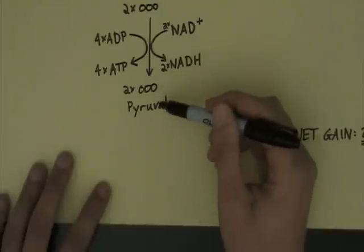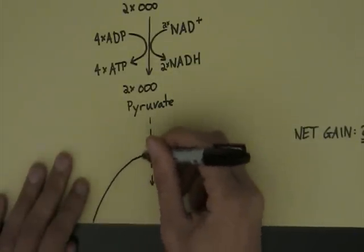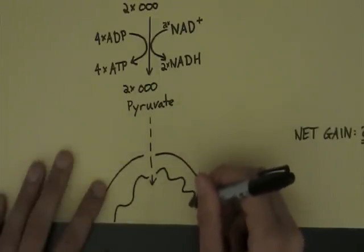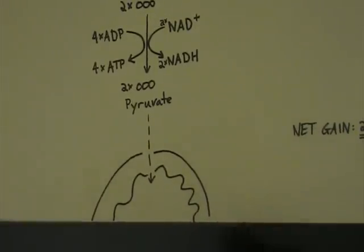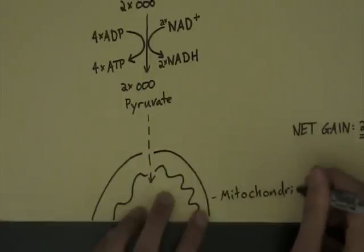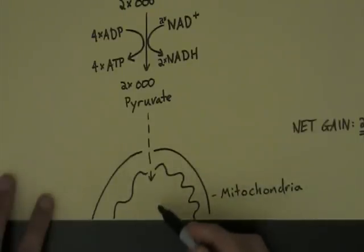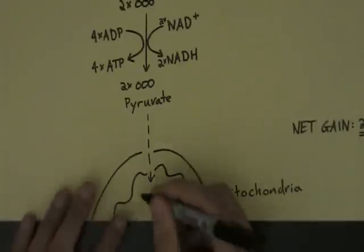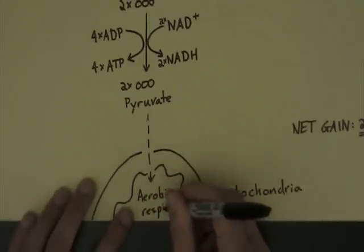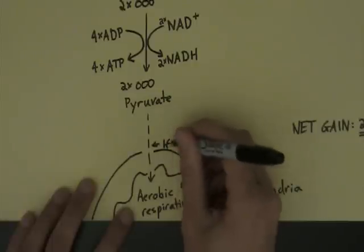In aerobic respiration, pyruvate will be taken into the mitochondria. And in the mitochondria, it will undergo the reactions of the Krebs cycle and the electron transport chain to produce lots of ATP. So this is our mitochondria. This is where the Krebs cycle happens. This is where the electron transport chain takes place. This is moving on to aerobic respiration.